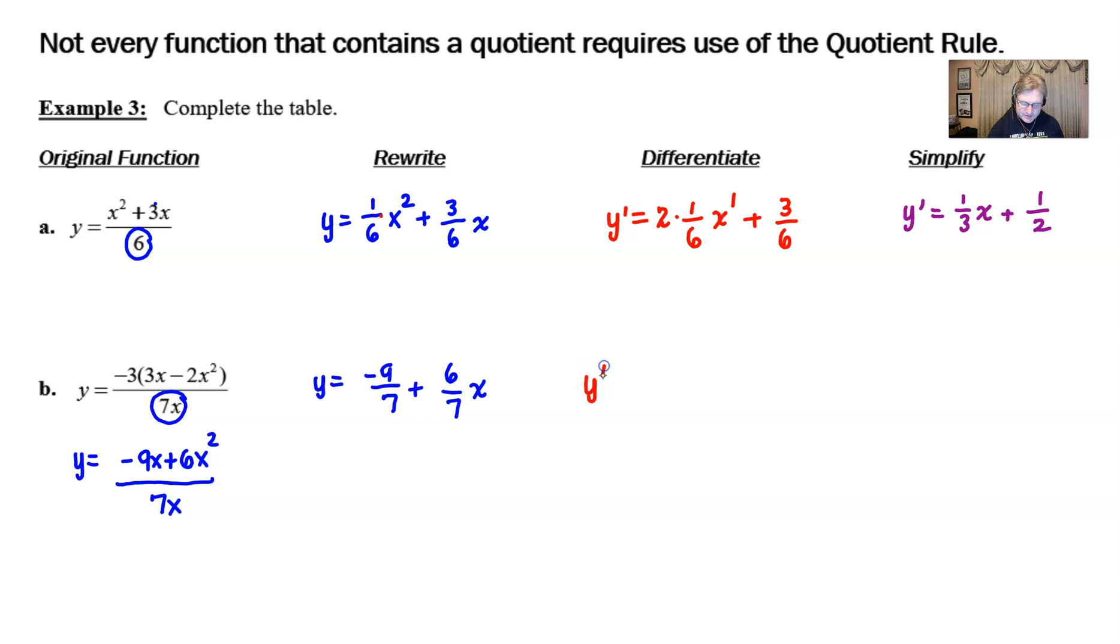Taking the derivative, using our rules, we know the derivative of a constant is, of course, going to be zero, even if that constant is this ugly fraction. And then the derivative of a constant six sevenths times x with respect to x is just six over seven. And when you look at this, there's really not much to simplify except to maybe not write the zero plus.